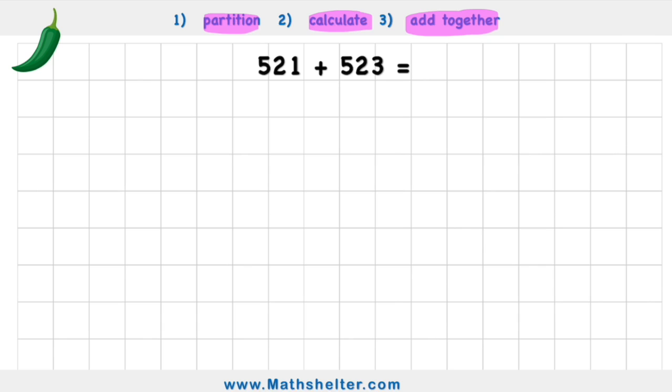So let's see what that means and let's start with this word partition. When we're partitioning a number, if we take this first number for example, I have 521. Now when I'm thinking about 521, I need to understand that the 1 is in the 1's column, the 2 is in the 10's column, and the 5 is in the 100's column.